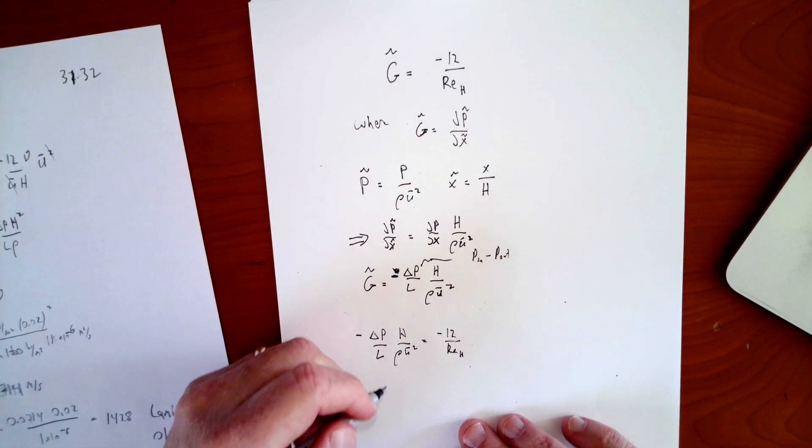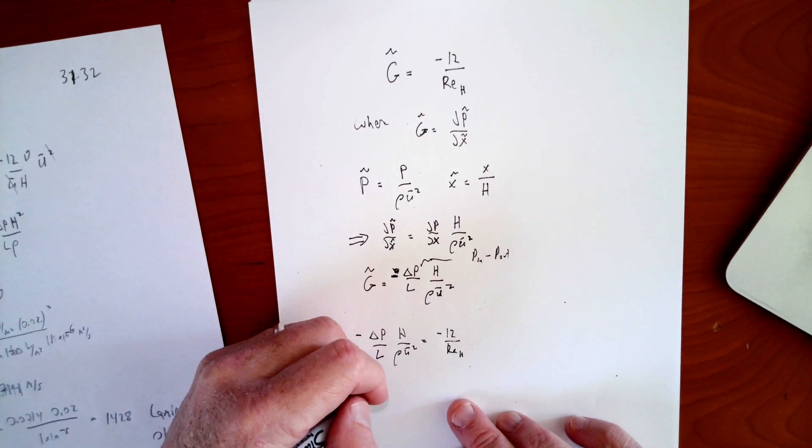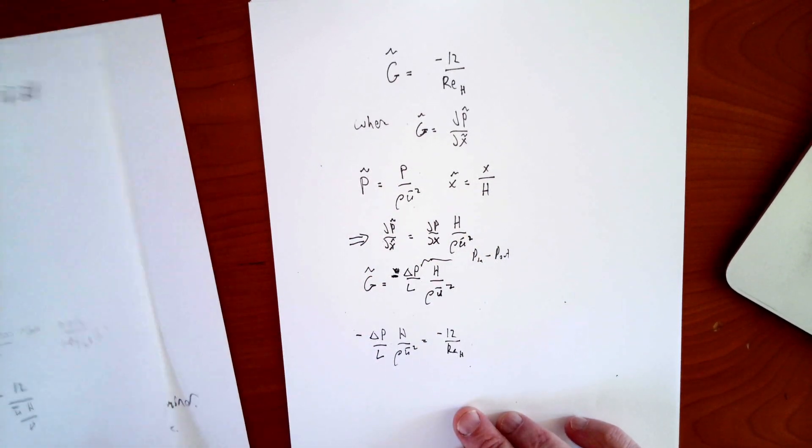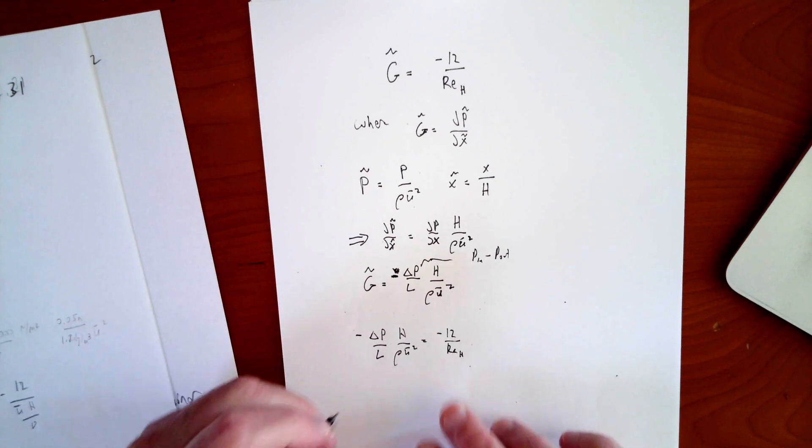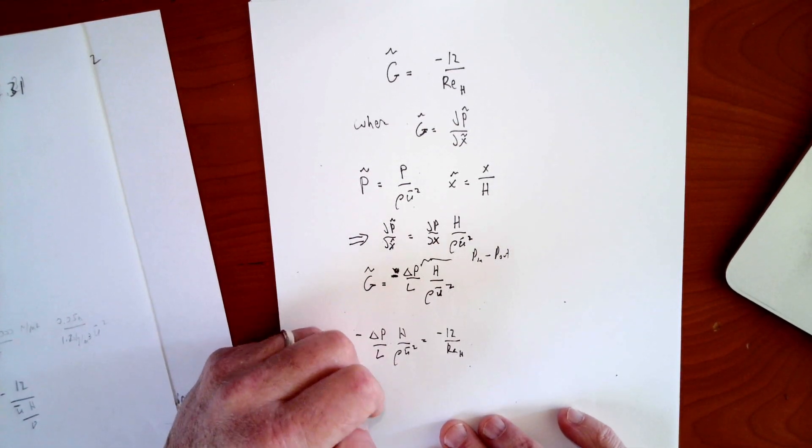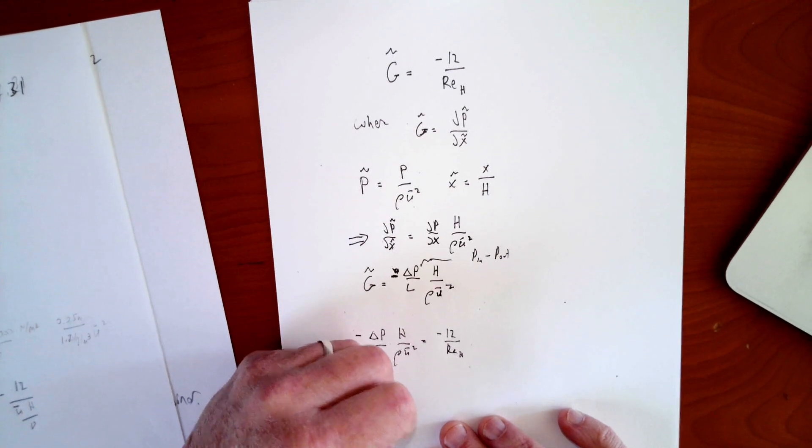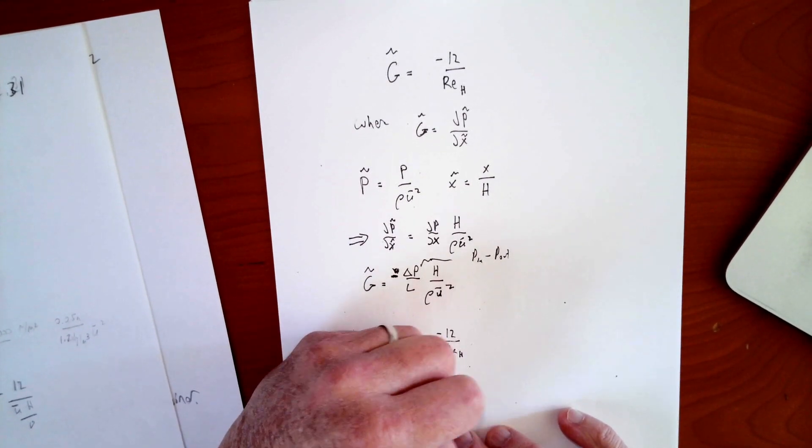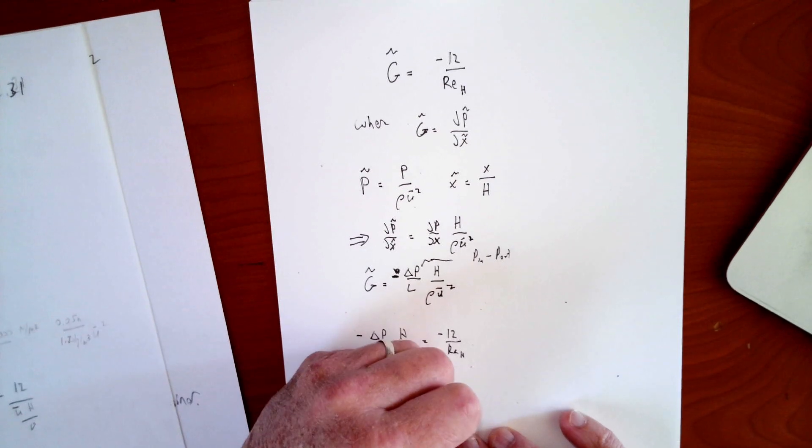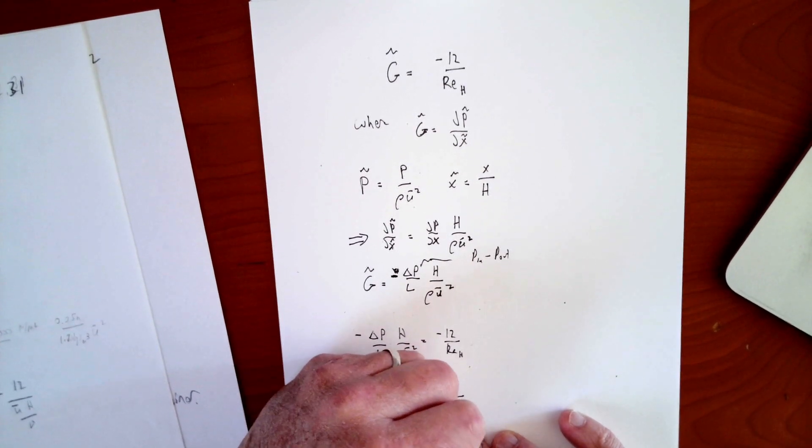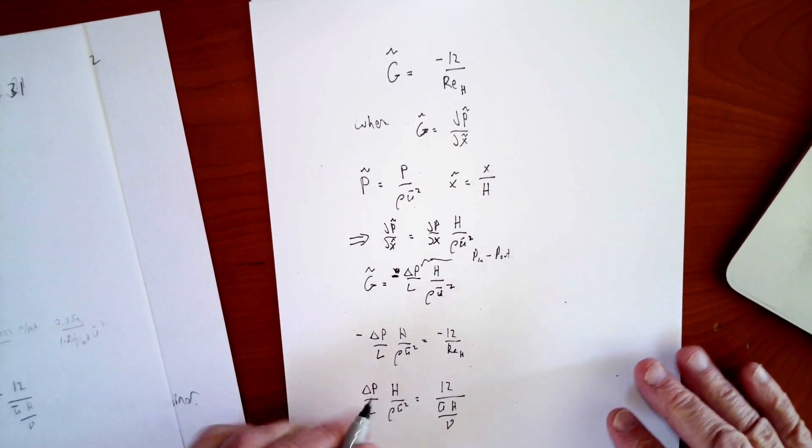So I want to solve this for u. So how am I going to do that? Well, I'm going to replace the Reynolds number so that the u becomes explicit. So I have delta p over l, h over rho u bar squared equals 12 over u bar h over nu, the Reynolds number.